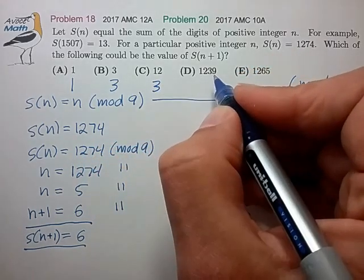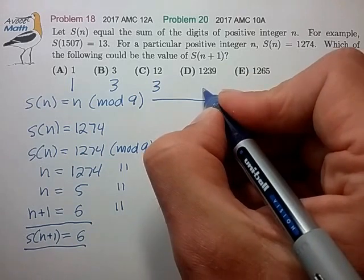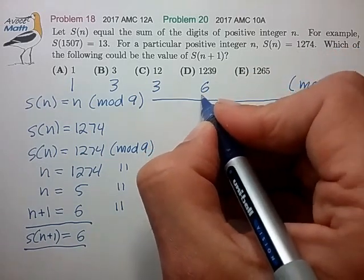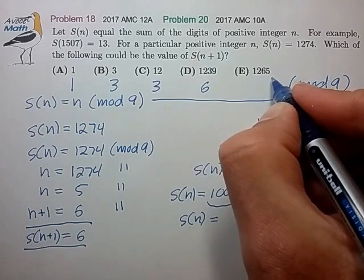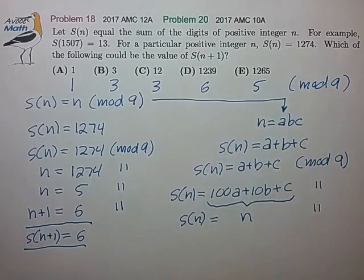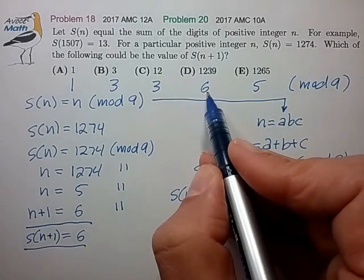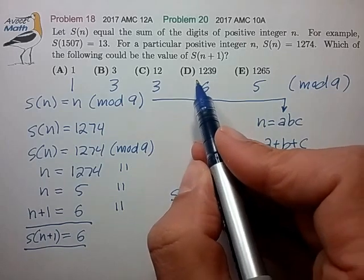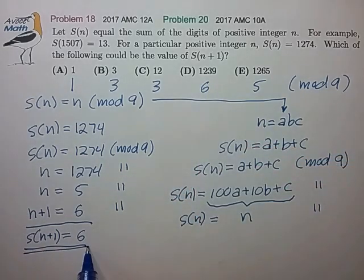12 is equal to 3 in mod 9. 1239 if we divide by 9 we find a remainder of 6. So that's equal to 6 in mod 9. So that's a potential correct answer. And we find that 1265 is equal to 5 in mod 9.